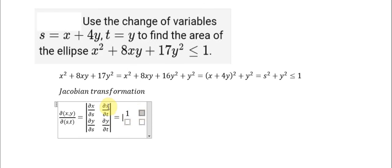The partial derivative of S with respect to T: since we don't have x in the T expression, that becomes 0. The partial derivative of Y with respect to S: we have s and 4y, so that becomes the number 4. The partial derivative of Y with respect to T: we have y, so this becomes 1.